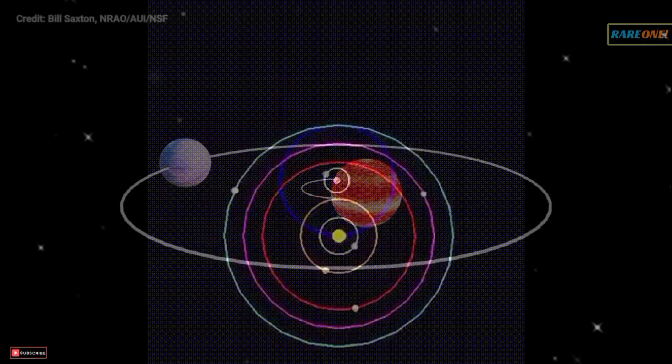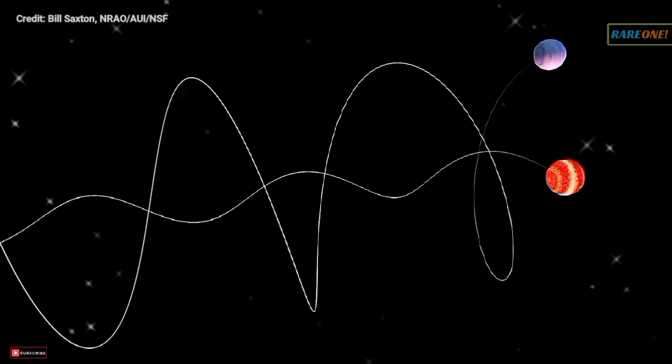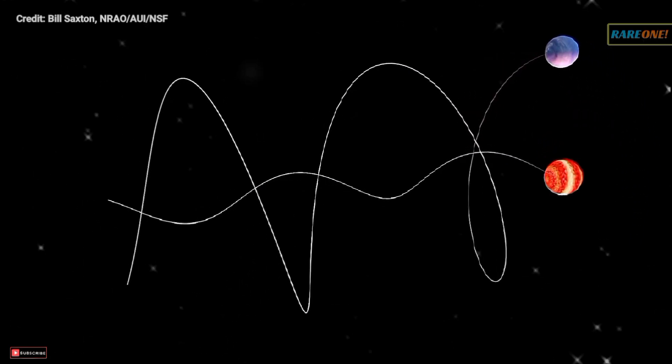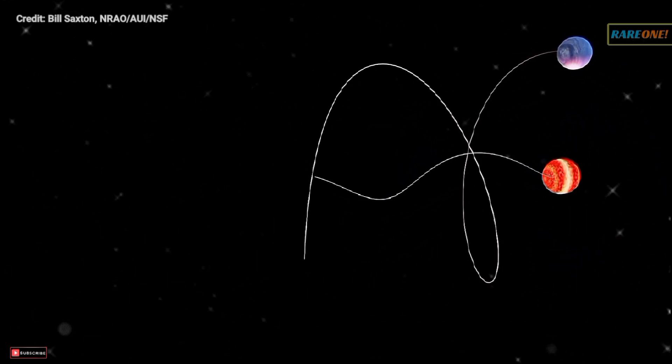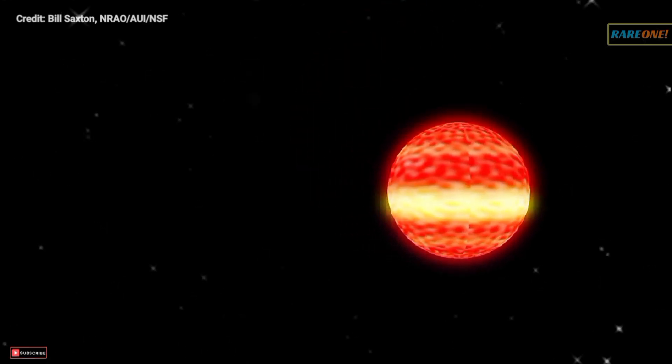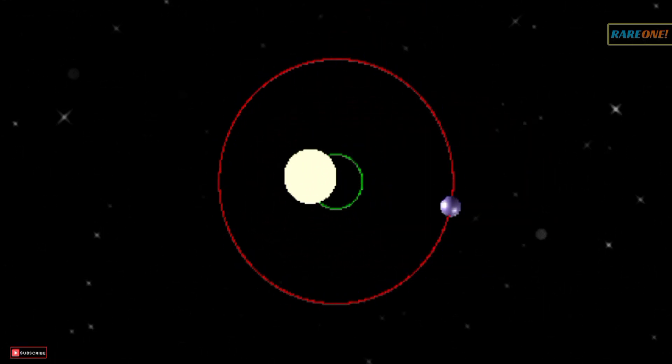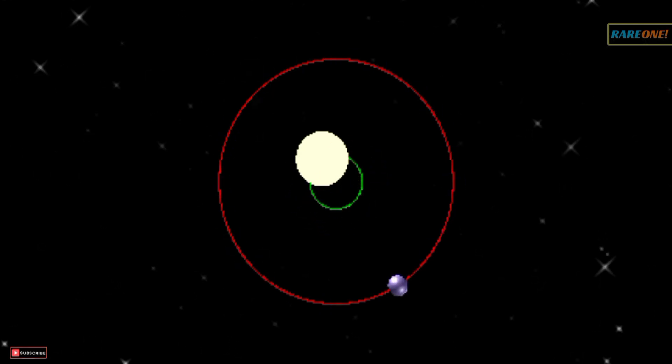But here's the kicker. This barycenter isn't static. It moves around as the planets go about their orbits, causing our Sun to do a little cosmic dance. And when we observe other stars with planets, we can detect this wobble, giving us clues about the unseen planets lurking around them.